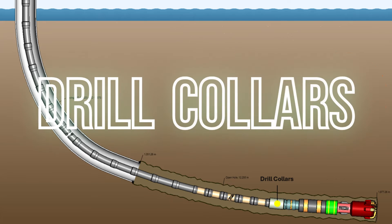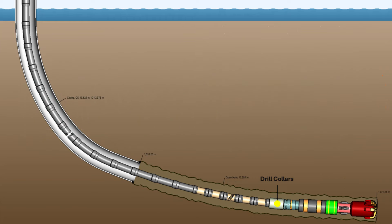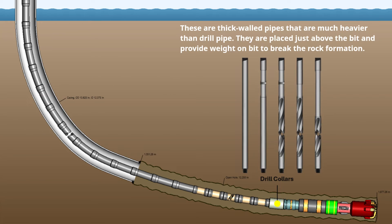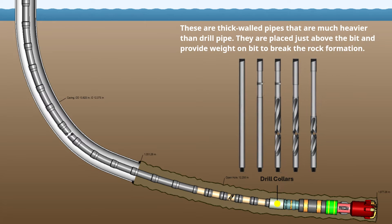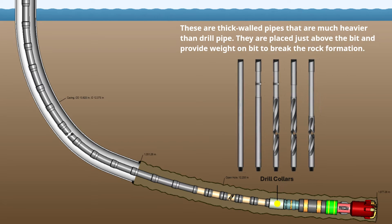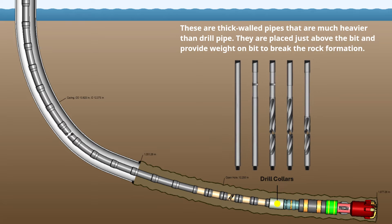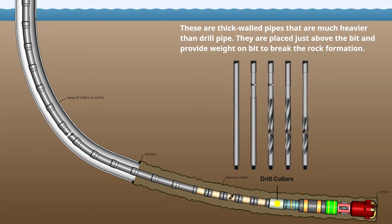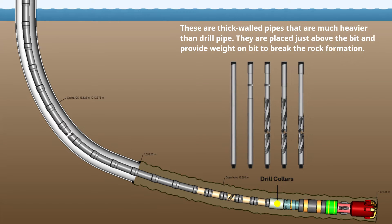Next we have drill collars. These are thick-walled pipes that are much heavier than drill pipe. They are placed just above the bit and provide weight on bit to break the rock formation.